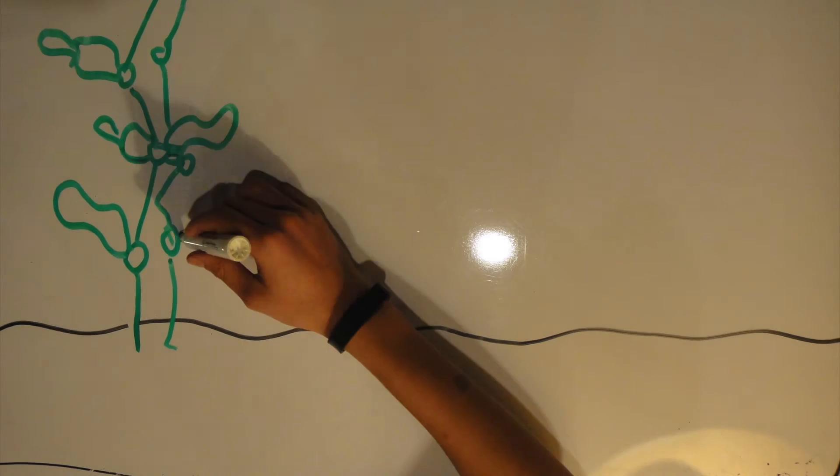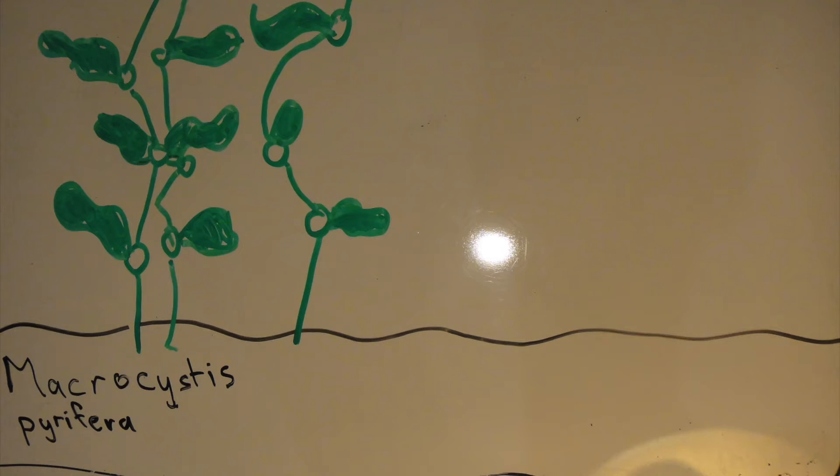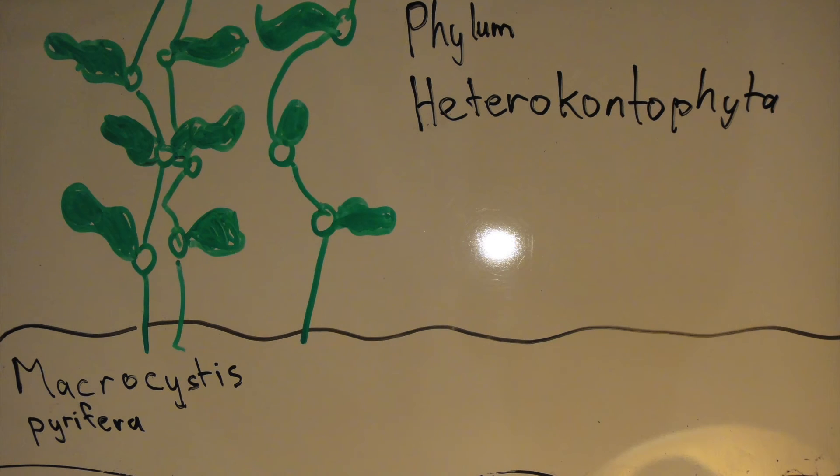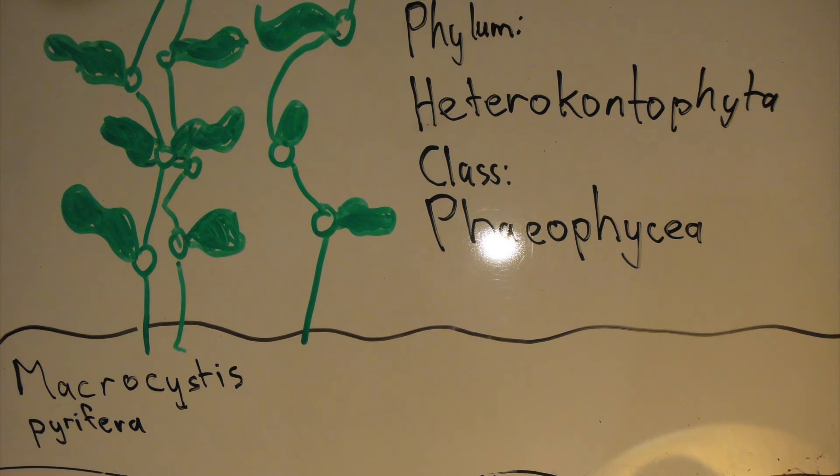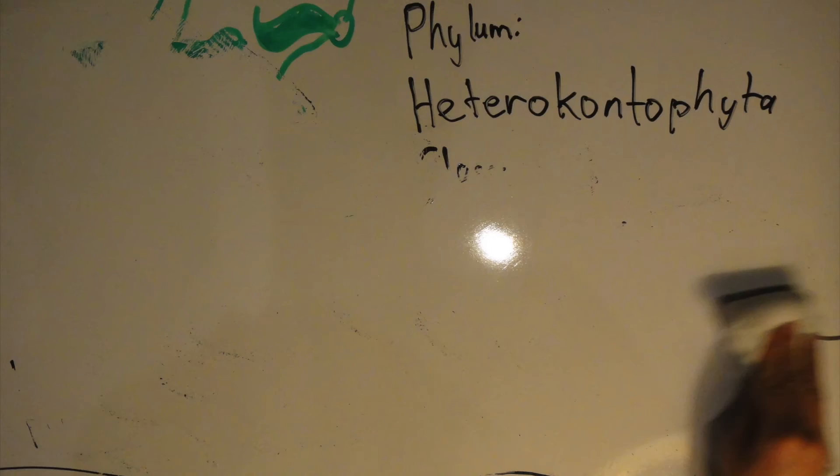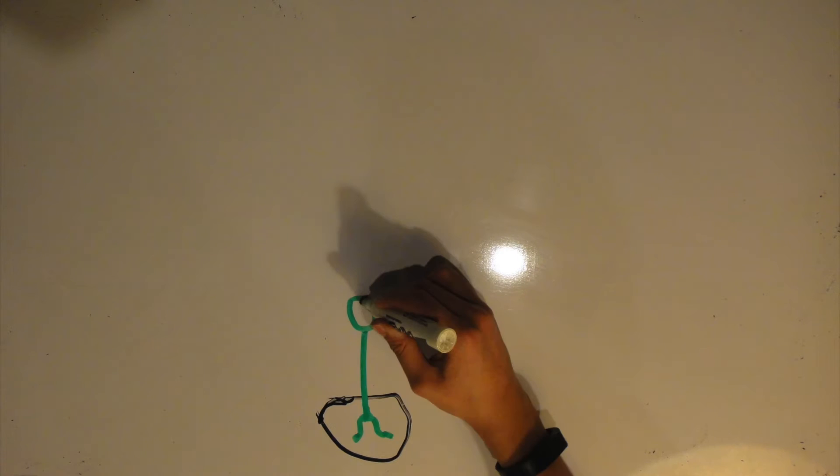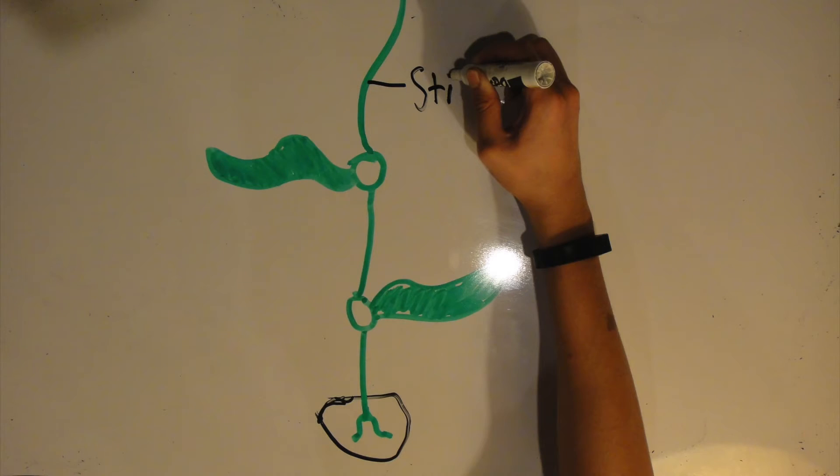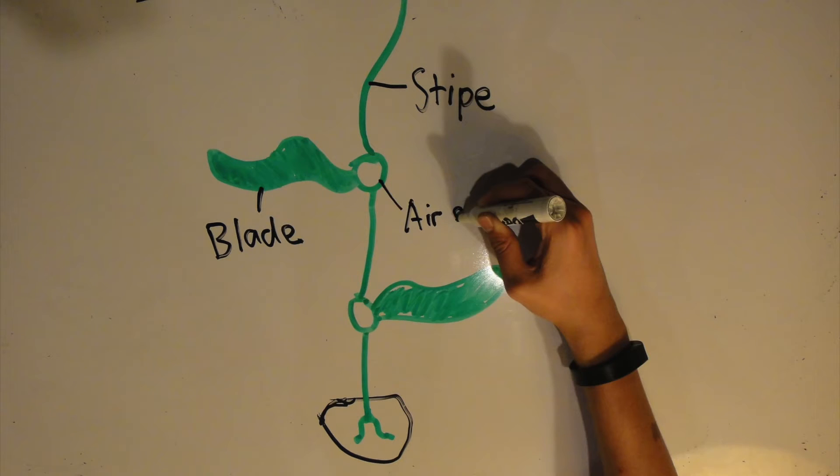Brown algae kelp, otherwise known as Macrocystis pyrifera, is part of the phylum Heterokontophyta and the class Phaeophyceae. Being the primary producer of the tide pool ecosystem, the brown algae kelp is a phototrophic organism, absorbing the sunlight for energy. Brown kelp uses generally four certain structures to keep itself anchored and upright: the stipe, the blade, the air sac, and the holdfast.